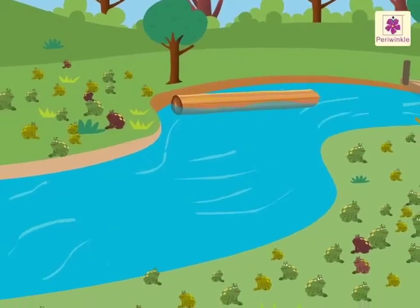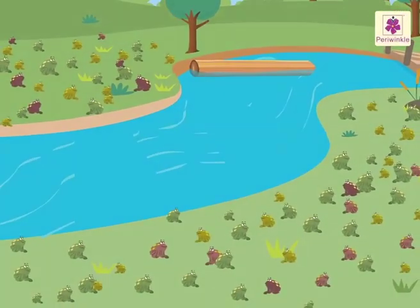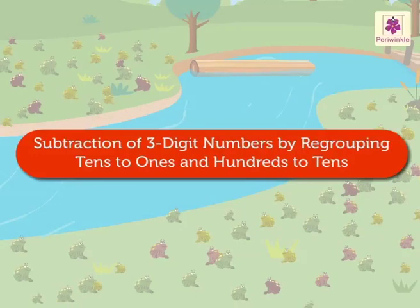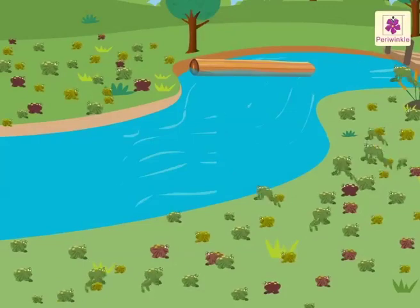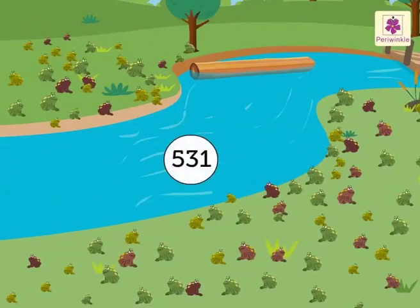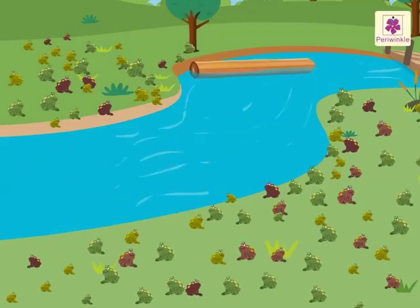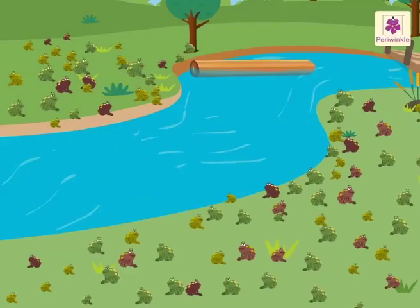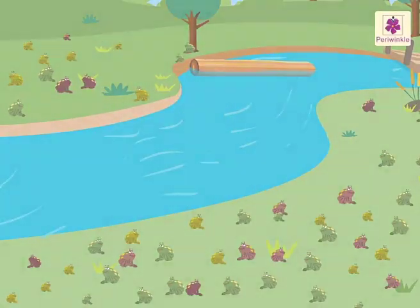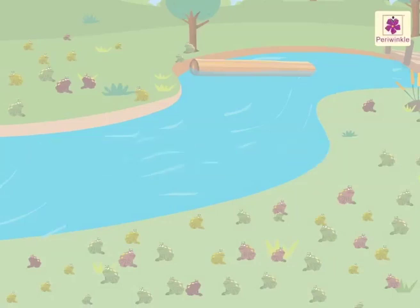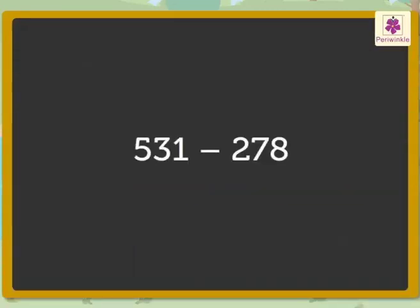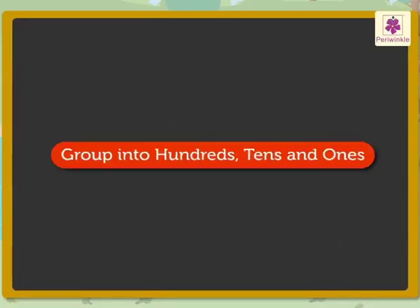We are back in the forest today! Let us learn subtraction of three-digit numbers by regrouping tens to ones and hundreds to tens. Look at the frogs jumping here and there. There are 531 frogs on the ground and 278 frogs jumped into the water. How many frogs are left on the ground? We can get the answer by finding the difference between 531 and 278.